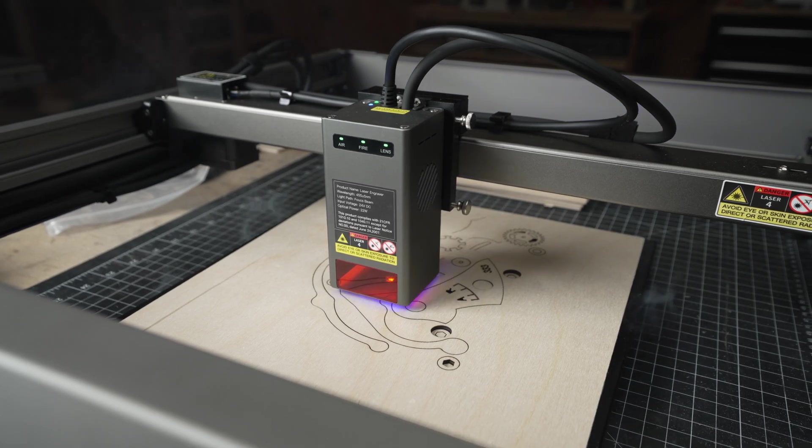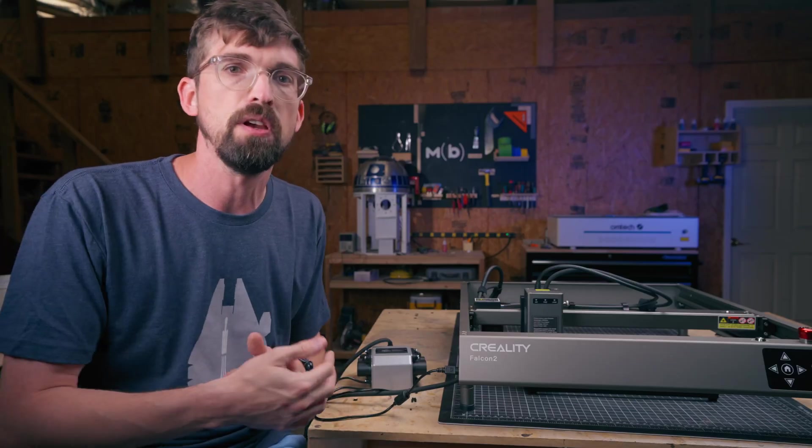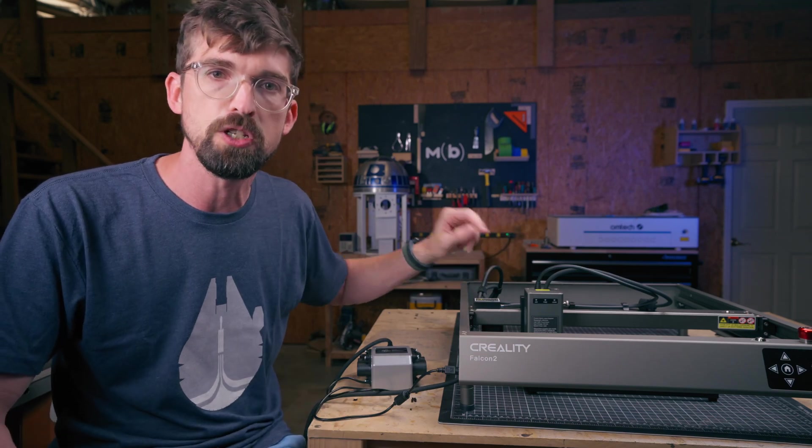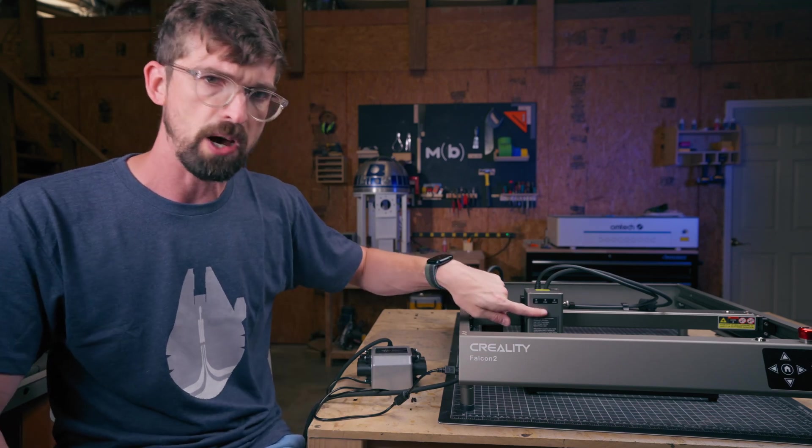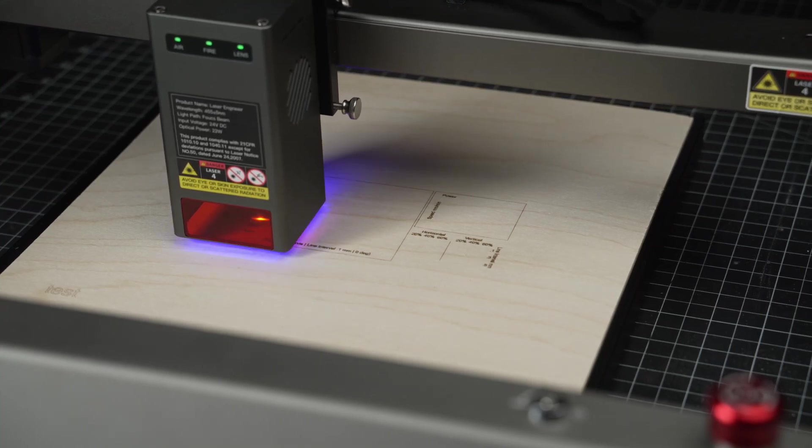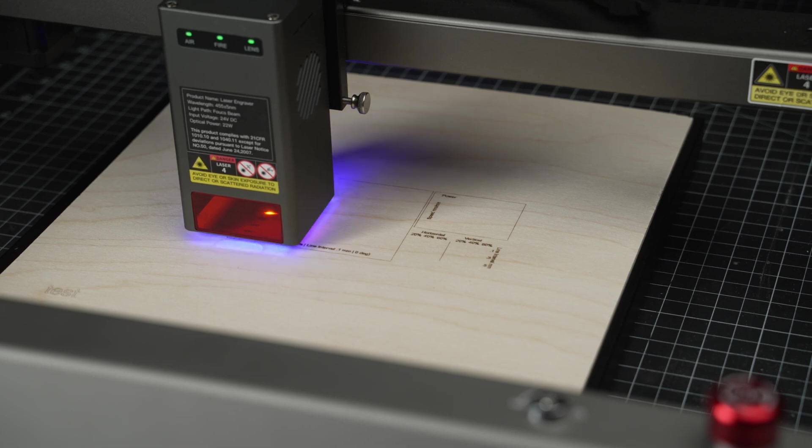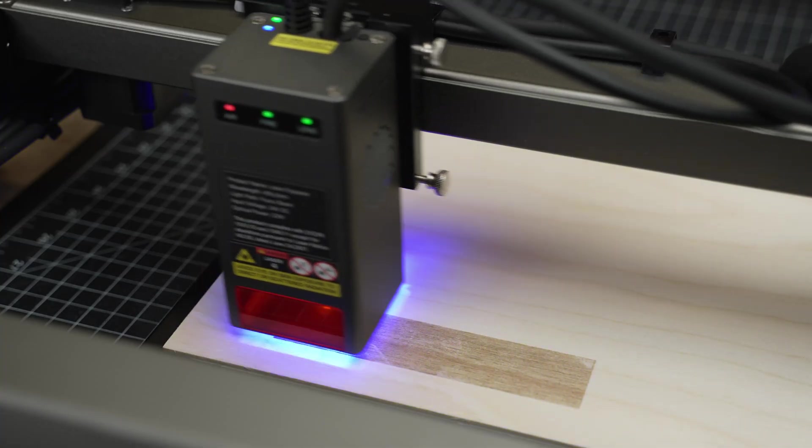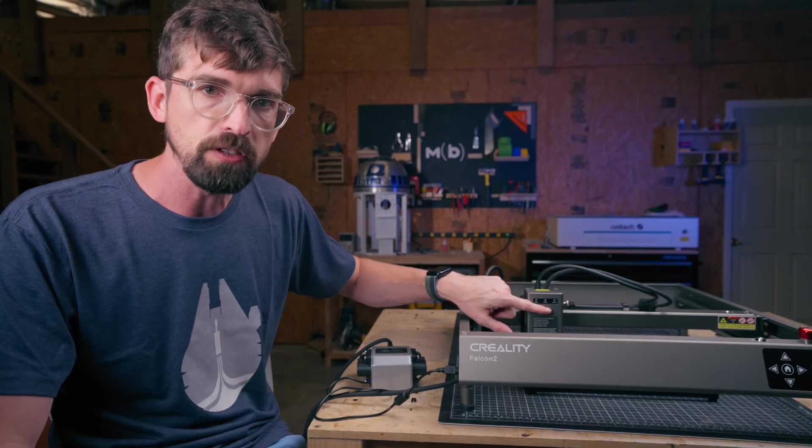Now other than focus, you can still have problems with the performance of your machine in like the overall quality. And they're doing a pretty good job helping to address this with what they're calling this triple monitoring system. So there's three lights right here, one for air, one for fire and one for lens. Specifically, when this is turned on, it can actually tell when there's air going through the module. It'll actually give you a red light if there is no air going through.